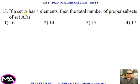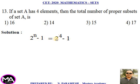13th question. If a set A has 4 elements, then the total number of proper subsets of set A is? Four options are given. Solution: Total number of proper subsets = 2^N − 1 = 2^4 − 1 = 16 − 1 = 15. That is option third.